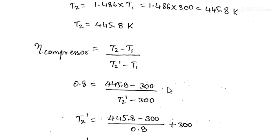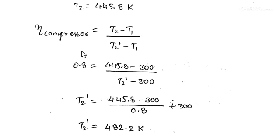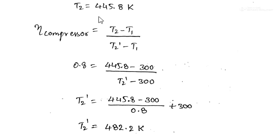Substituting T2 into the isentropic efficiency of the compressor formula: eta_C = (T2 − T1)/(T2' − T1). With eta_C = 0.8, T2 = 445.8 K, and T1 = 300 K, we rearrange to solve for T2'. Simplifying gives T2' = 482.2 K.